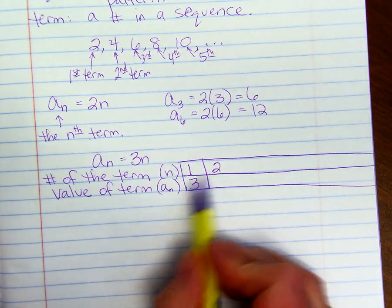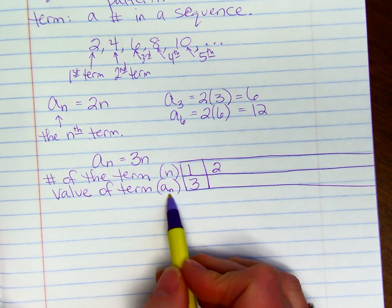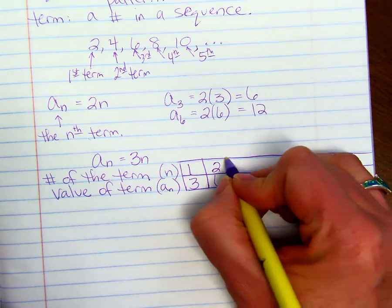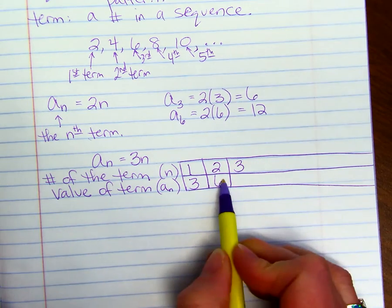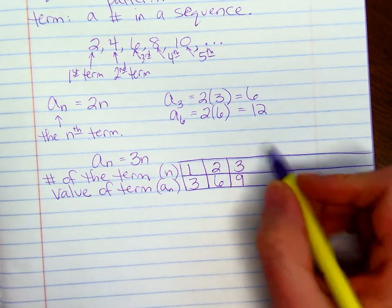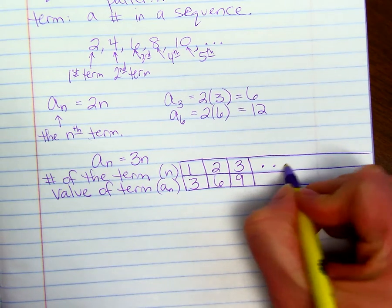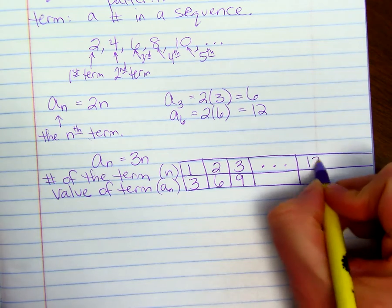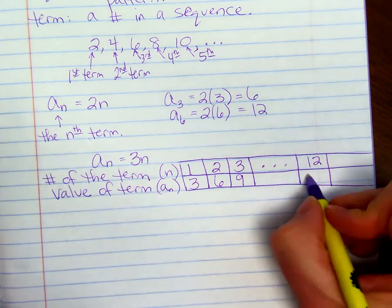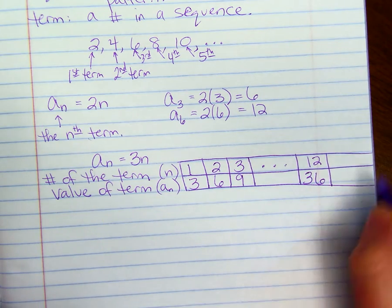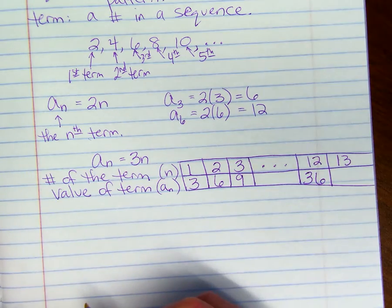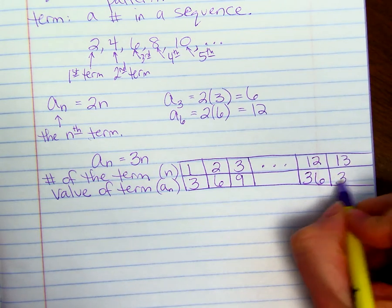If n is 2, a sub 2, which means the second term, will be 3 times 2, or 6. If n is 3, the third term will be 3 times 3, or 9. And we can continue on. If we wanted the 12th term, we would just do 3 times 12 and get 36. If we wanted the 13th term, we would do 3 times 13 and get 39.